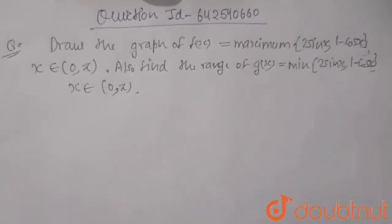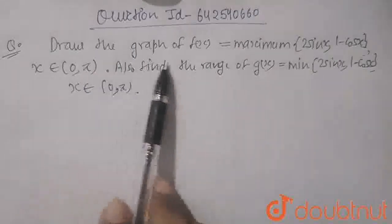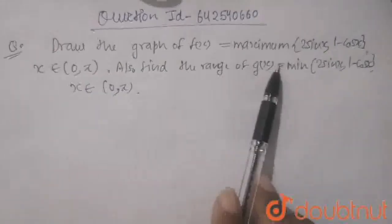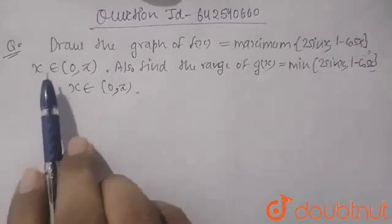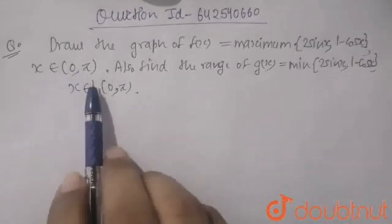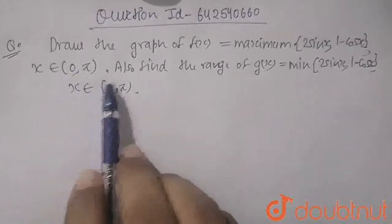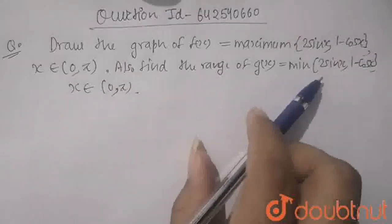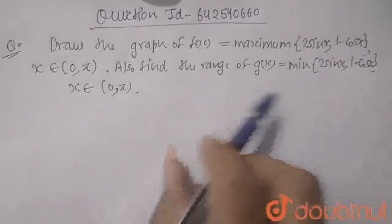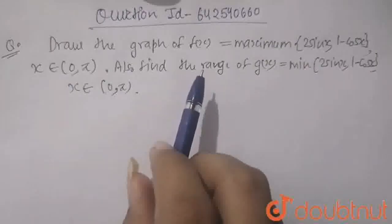Hello friends, so in this question, as you can see, we have to draw the graph of fx equals to maximum of 2sinx and 1-cosx, where x belongs to 0 to pi. And we have to also find the range of gx equals minimum of 2sinx and 1-cosx, where x belongs to 0 to pi.